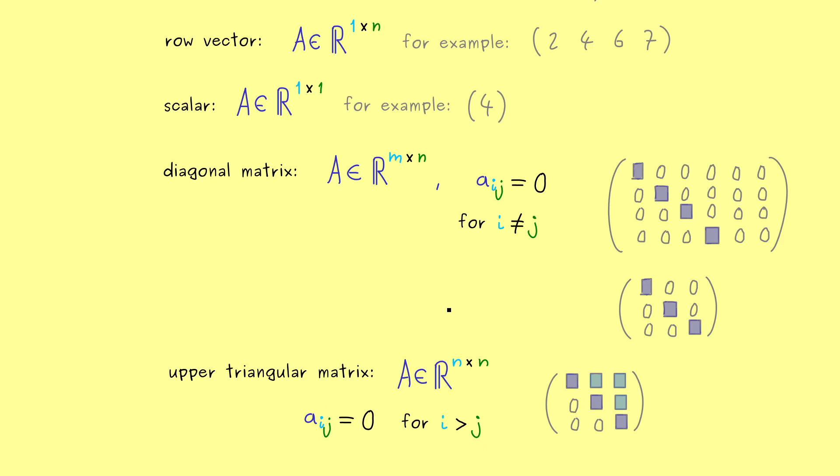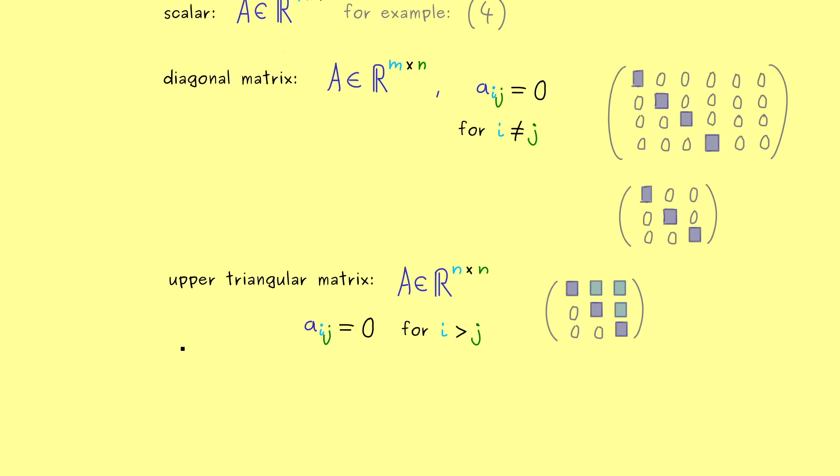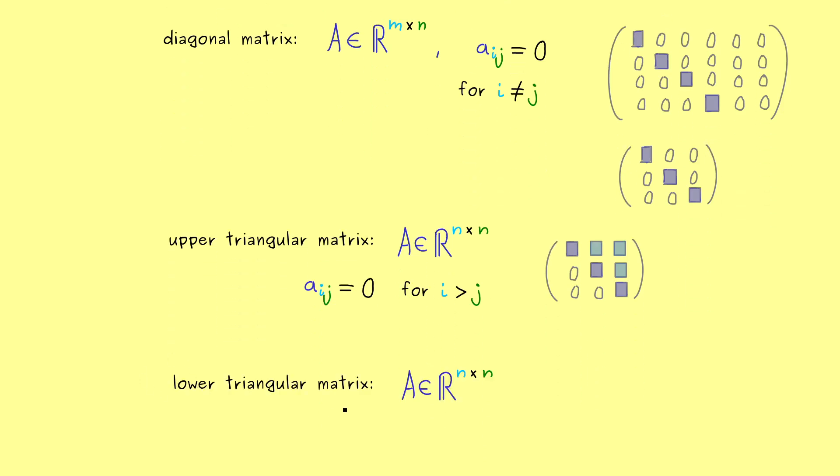Ok with this it might not surprise you that we can also define the notion lower triangular matrix. It's also a square matrix but now the zeros should lie above the diagonal. In other words on the diagonal and below the diagonal everything is allowed but above the diagonal we need to find the zeros.